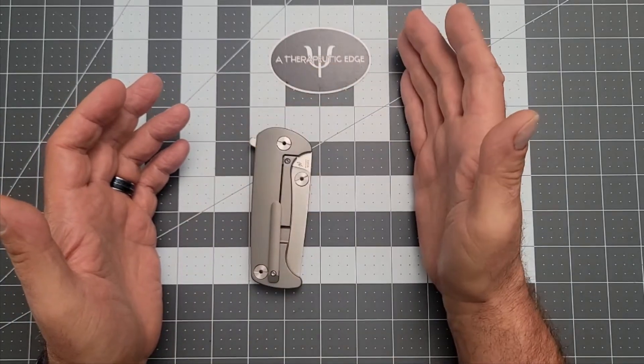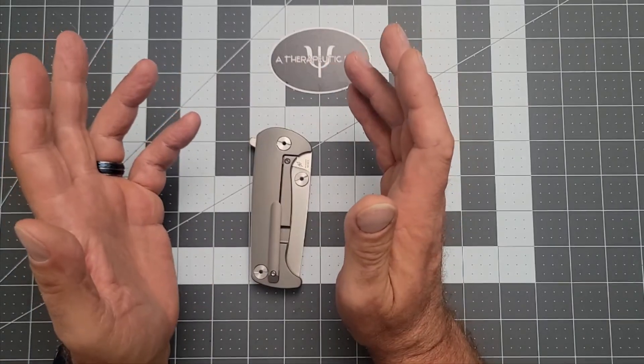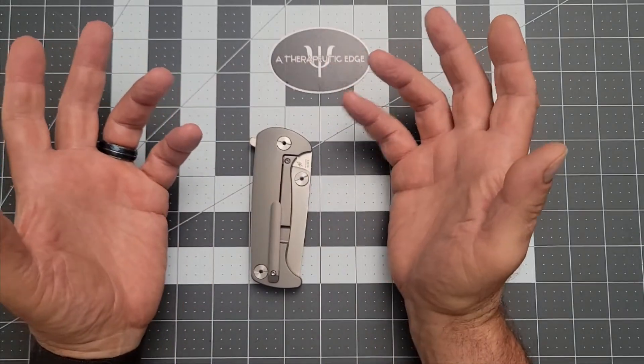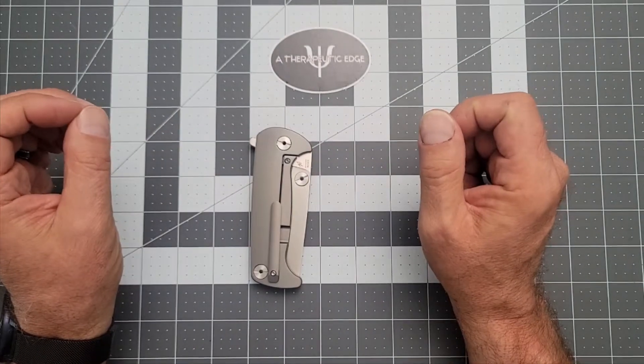If we bring that flipper tab in, you're looking at an inch and three quarters, which means, even for me, big jeans, big pockets, this is pretty much all you're going to be carrying in that front right pocket.